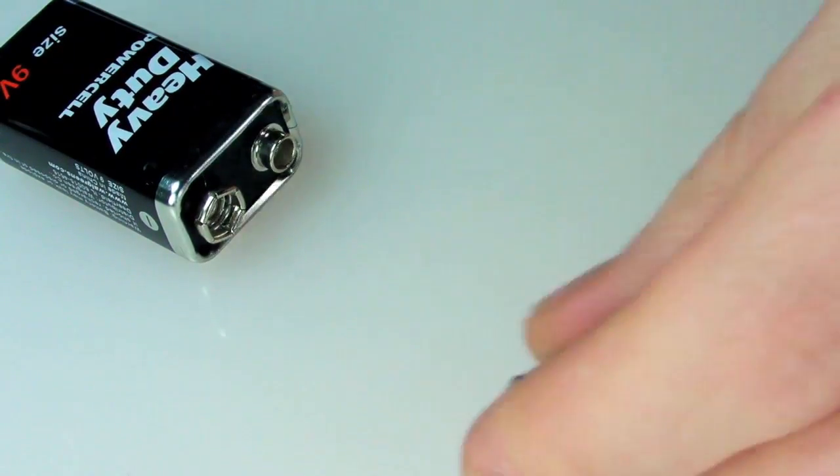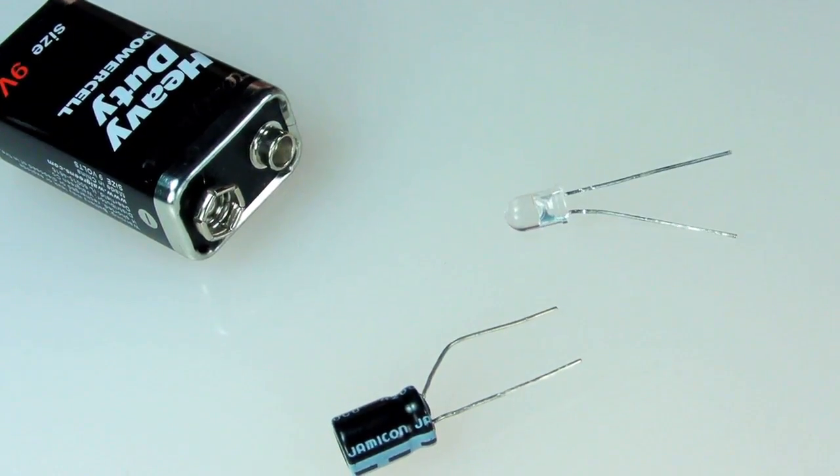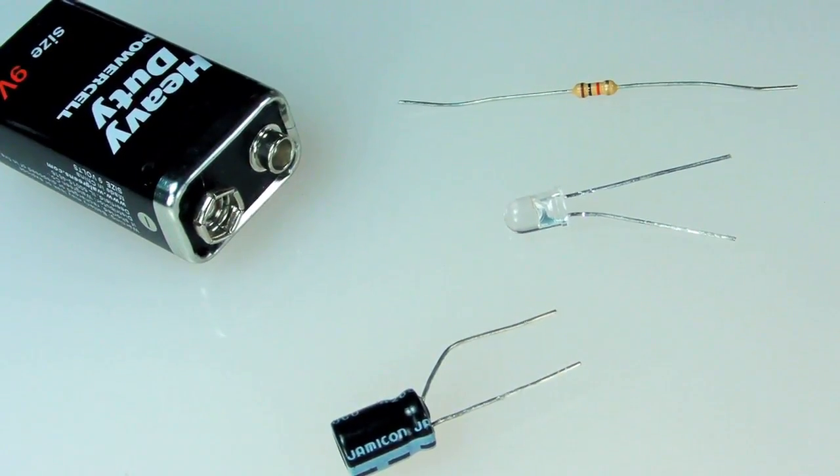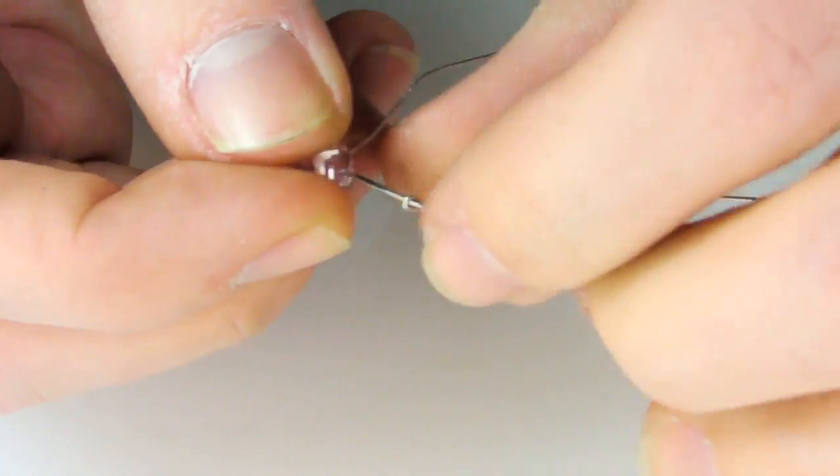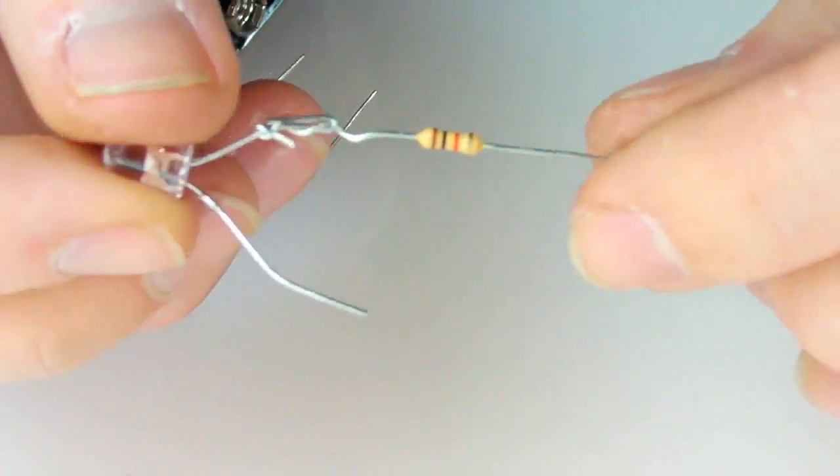For a simple way to demonstrate a capacitor charging, use a good old nine-volt, a 220 microfarad cap, an LED, and a resistor. For this one, I decided not to use a breadboard and just wrap the resistor around the positive, longer end of the LED.